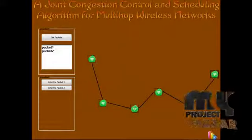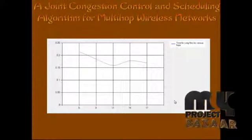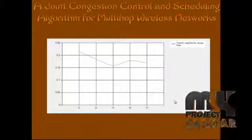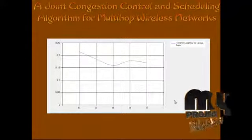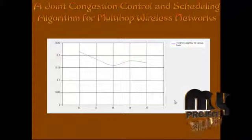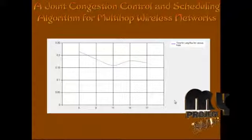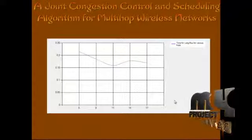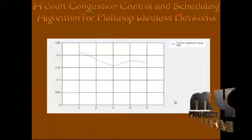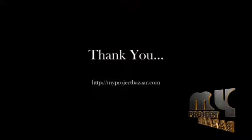Then we show the graph. The graph represents the time for long flows over various hops. The x-axis shows the number of hops from source to destination, and the y-axis shows the time to reach the destination. The time delay has been reduced and throughput has been increased. Thank you.